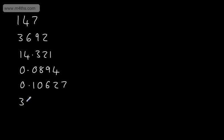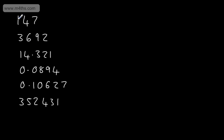And I'll do another large number — let's do 352,431. What we're going to do is look at significant figures. When we read a number from left to right, the first significant figure is the one that has a value. Reading 147 from left to right, the first significant figure is the one.